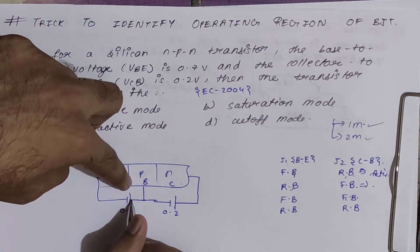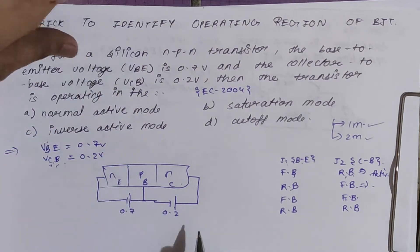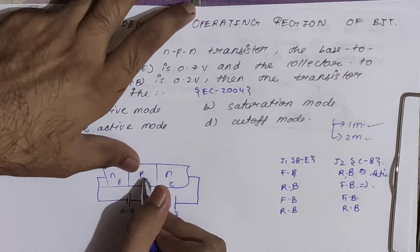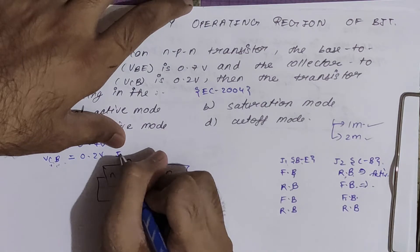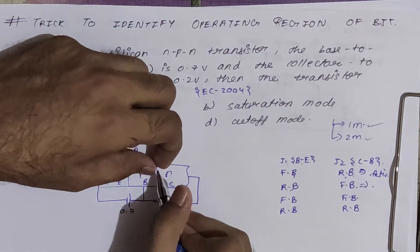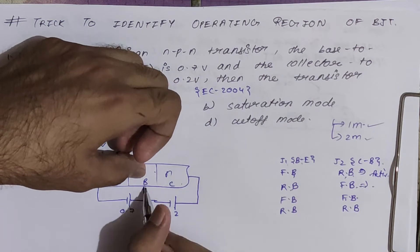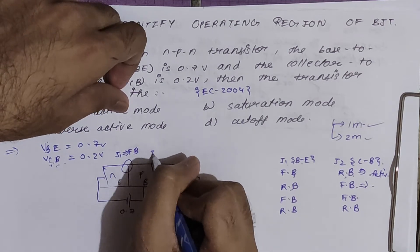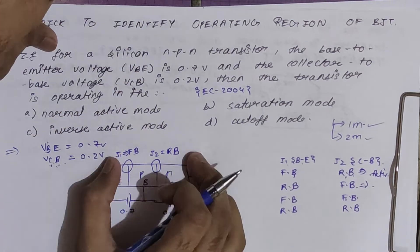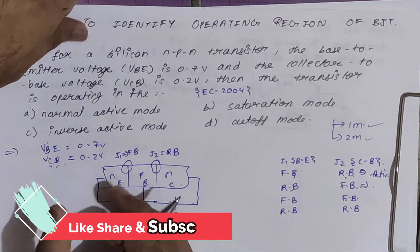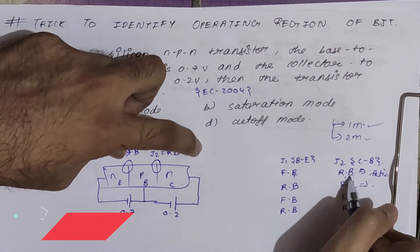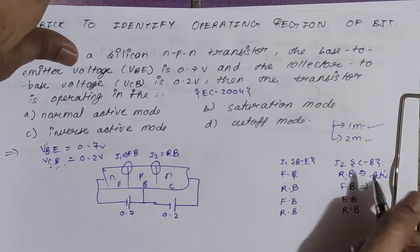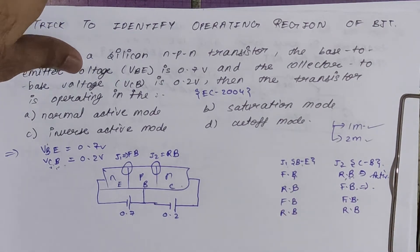Observing the diagram: for J1 (BE junction), N is getting negative voltage and P is getting positive voltage, so J1 is forward biased. For J2 (CB junction), P is getting negative voltage and N is getting positive voltage, so J2 is reverse biased. From the table, J1 forward biased and J2 reverse biased means the transistor operates in the forward active region.